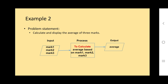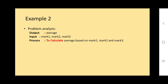Example two: Calculate and display the average of three marks. We write output as 'average.' We cannot write 'three marks' as one variable - we write mark one, mark two, mark three. The process is 'to calculate average based on mark one, mark two, and mark three.' So: output is average, input is mark one, mark two, mark three, and the process is to calculate average based on mark one, mark two, mark three.